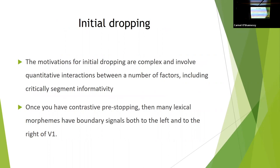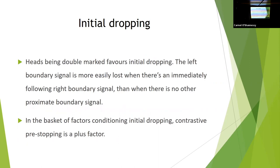Initial dropping, the motivations for initial dropping are complex. I'm certainly not going to cover them today. Critically, they'll include concepts such as segment informativity that people like Prim Prever and so on talked about. The point that I wanted to bring up here is once you have contrastive pre-stopping, many lexical items have a good boundary signal immediately to the left of the vowel and a good boundary signal immediately to the right of the vowel. So they've got double boundary marking. And my suggestion is that essentially in the basket of factors, in the basket of factors that determine initial dropping, whether it's going to happen or not, if you've got contrastive pre-stopping, you've got double boundary marking and that favors initial dropping.